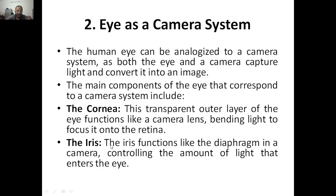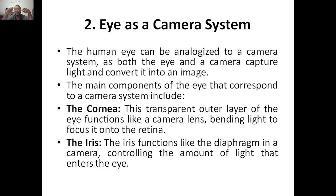The next part is the iris. Iris is nothing but it functions like a diaphragm in the camera. In the camera, after focusing, the light goes to the diaphragm. The iris acts as a diaphragm, controlling the amount of light that enters the eye — it decides exactly how much light should be entering your eye. This function is done by the diaphragm in the camera.